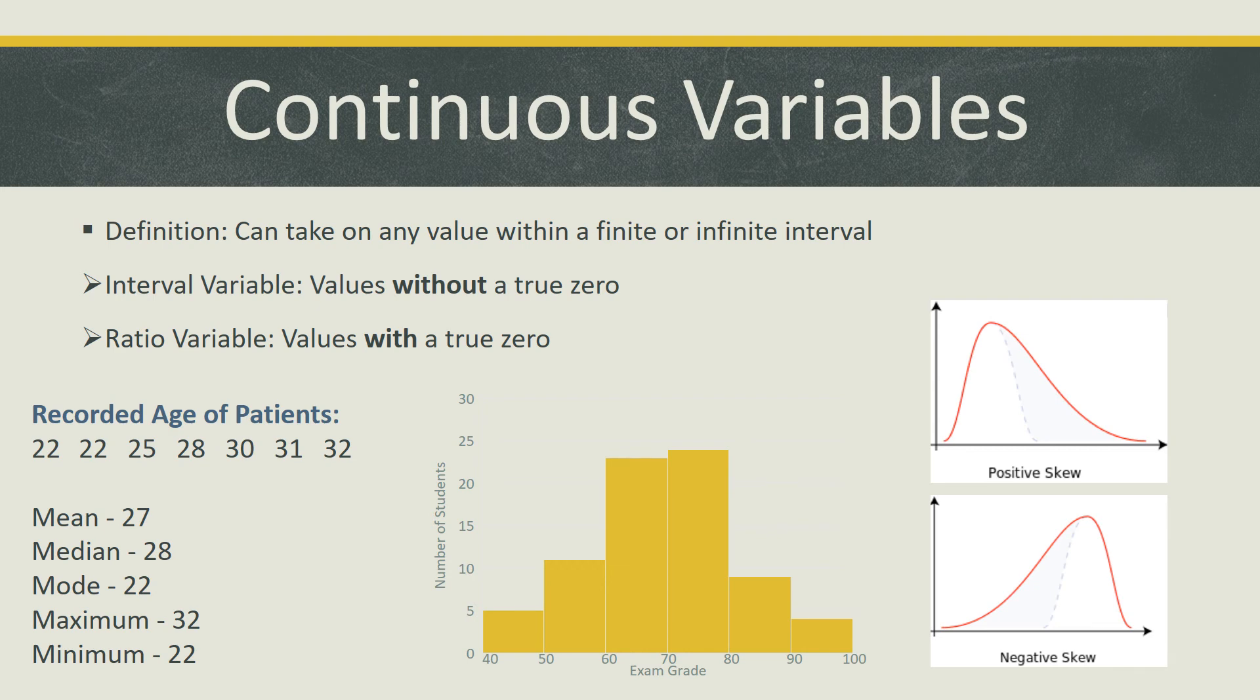Histograms and skews can also be used to show trends among a dataset by estimating the probability of distribution and measure of asymmetry of a continuous variable. The image in the middle shows the different ranges of exam grades, as well as the frequency of students falling within these ranges.